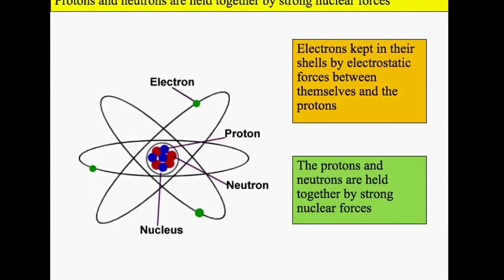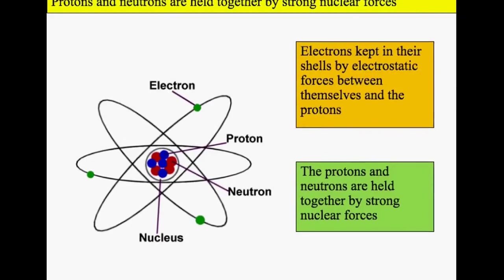What keeps us all together? Protons and neutrons are held together by strong nuclear forces, very strong forces. The electrons are kept in their shells by the electrostatic forces between themselves and the protons. The electrons are negatively charged, the protons are positively charged. Whenever you have negative and positive things, you get electrostatic attraction.